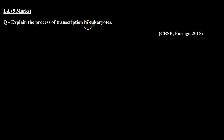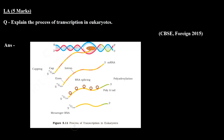Let's check the answer. We know that the transcription process involves a transcription unit, which consists of 3 things: the promoter, structural gene, and terminator. The promoter is for initiating, the structural gene is the coding region, and the terminator is for terminating the transcription.